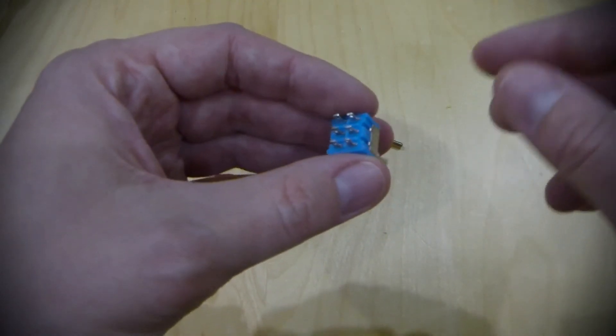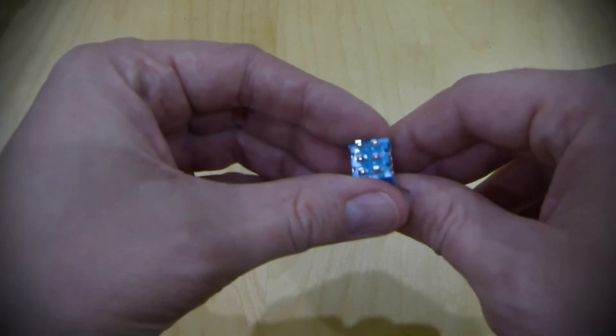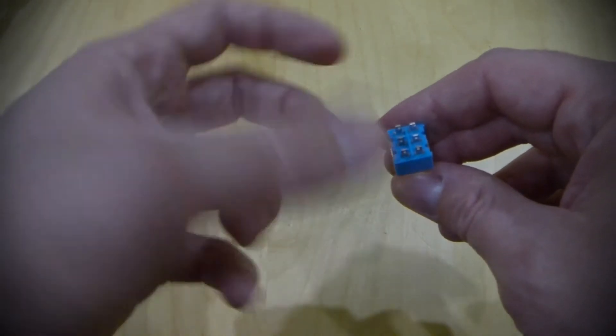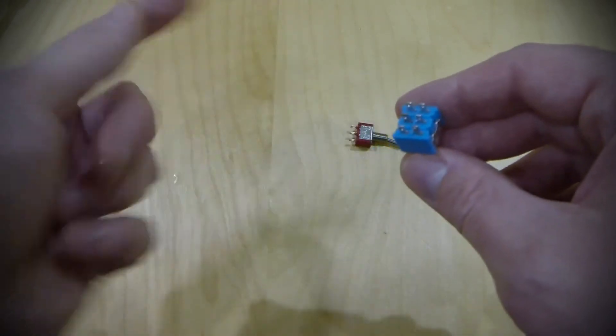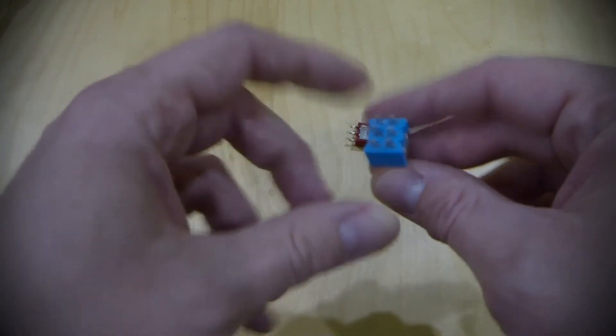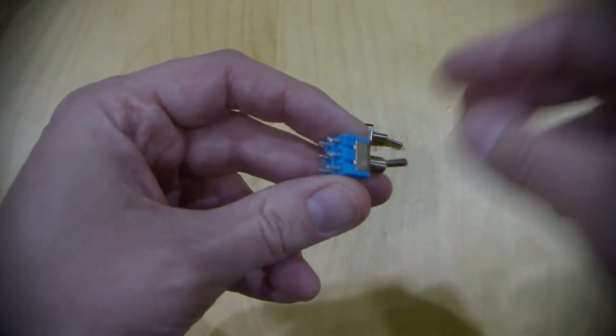Another thing you can do with a double pole double throw switch is you can do phase inversion, meaning that you can reverse the polarity of your pickup with a flick of the switch because you actually need a positive and a negative on your independent circuits. And then you flip them as you flip the switch. It reverses the positive and negative.